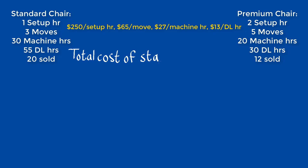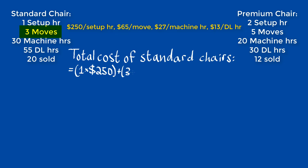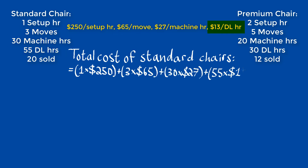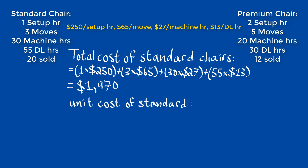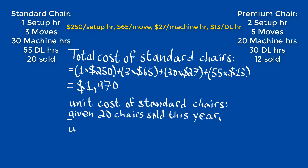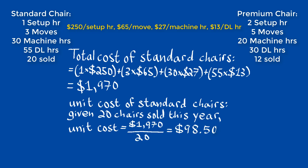We can now use this information to determine the total cost of the standard chairs, by a similar process to the departmental overhead rates — multiplying each of the activity-based rates by the activity usage — giving us a total cost of $1,970. Given that 20 chairs were sold this year, the unit cost is $1,970 over 20 chairs, giving us $98.50.